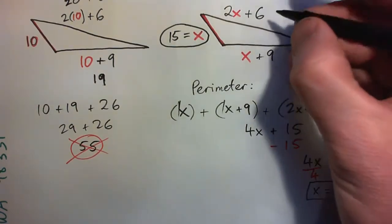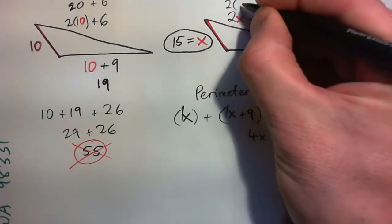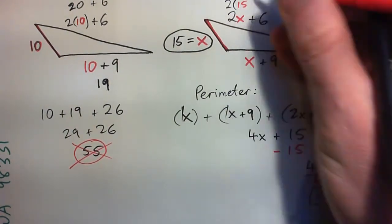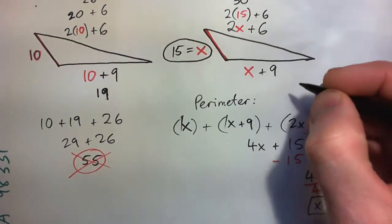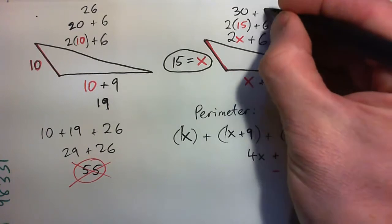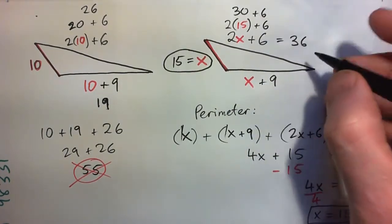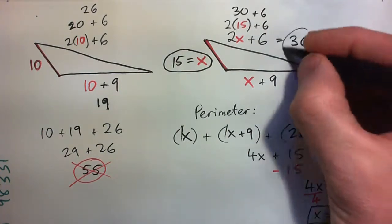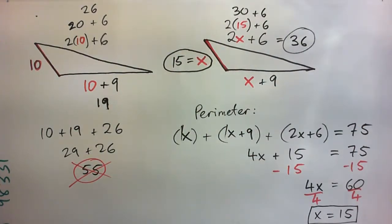What else do we have to find? We have to find 2X plus 6. This side, that will be 2 times 15, plus 6, which is 30, plus 6. Which is 36. So this side length is 36. What about X plus 9? What's that? Do that one.